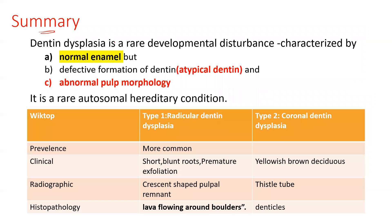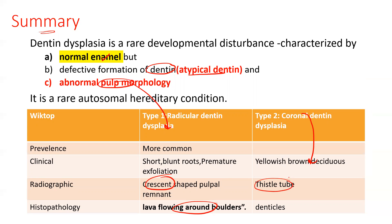To summarize: dentin dysplasia is a rare developmental disturbance characterized by normal enamel and defective, atypical dentin, with abnormal pulpal morphology. In radicular dentin dysplasia — the more common type — there are short blunt roots causing premature exfoliation, a crescent-shaped pulpal remnant, and histopathologically, lava flowing around boulders. In coronal dentin dysplasia, the primary teeth appear yellowish-brown, there is a thistle tube appearance radiographically, and histopathologically, a large number of denticles are seen.